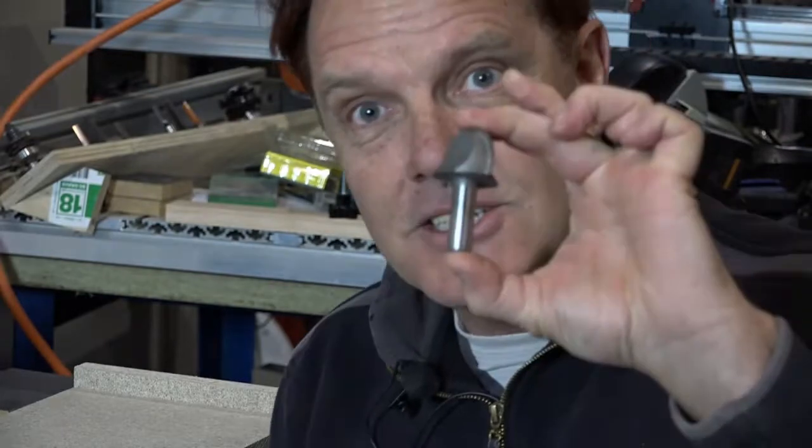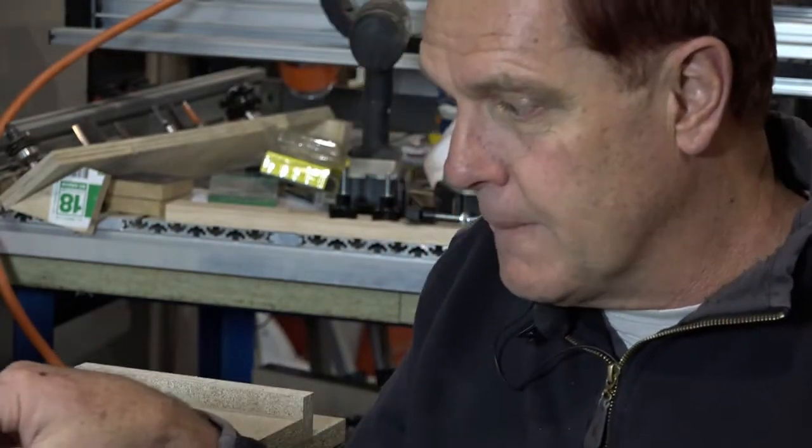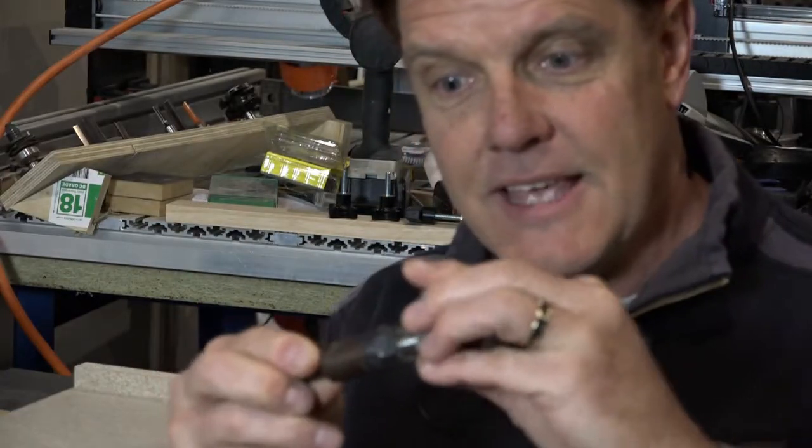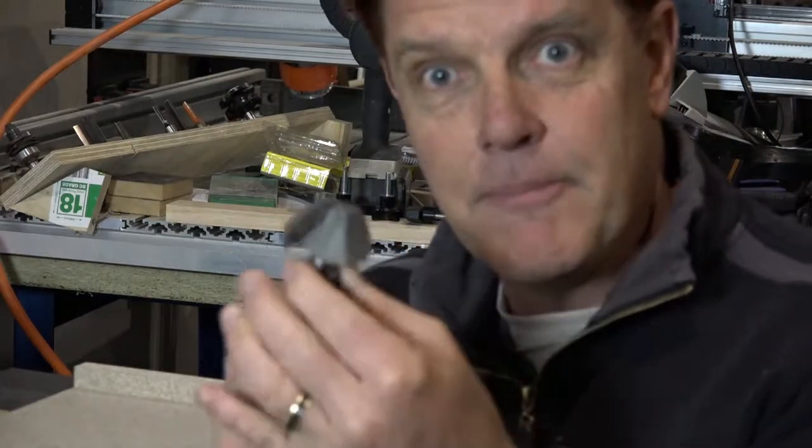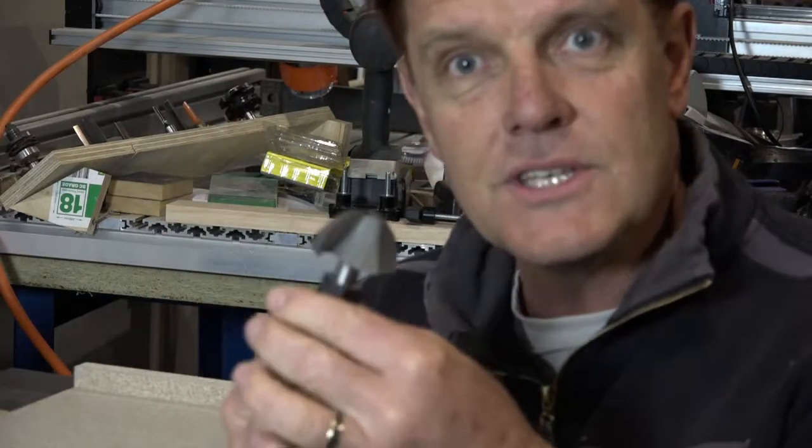But the problem is that it's too short to come out of the table enough. So I solved that as well. I got a router extension collet. So that slides in there and I tighten it up with the tools of course. And now we've got enough length.